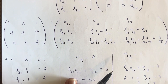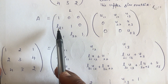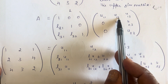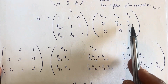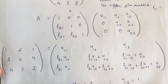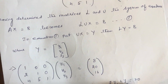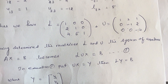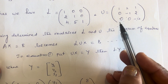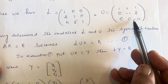Now from this we know all the values: L21, L31, L32, U11, U12, U13, U22, U23, U33. Substituting, the lower triangular matrix L equals [1, 0, 0; 2, 1, 0; 4, 5, 1] and the upper triangular matrix U equals [1, 2, 1; 0, -1, 2; 0, 0, -12].